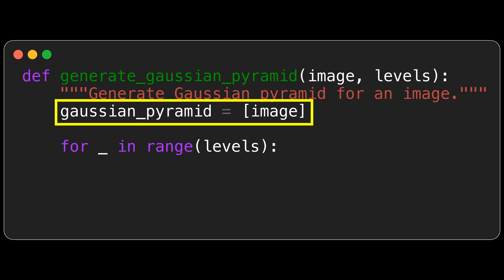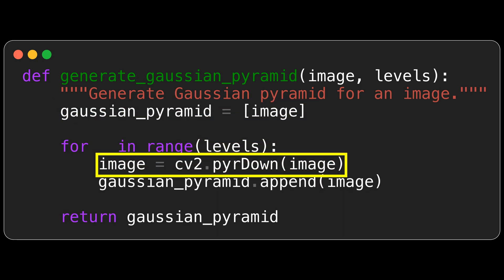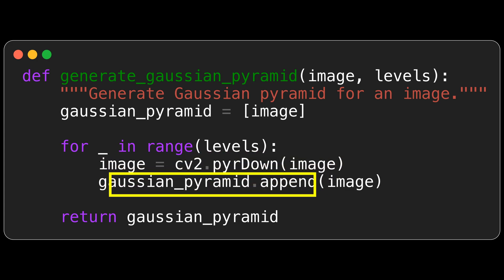For the Gaussian pyramid, it's very simple. We start with the original image and blur and downsample the image iteratively to get the image at the next level. The resulting Gaussian pyramid is a list of images with progressively smaller resolutions.